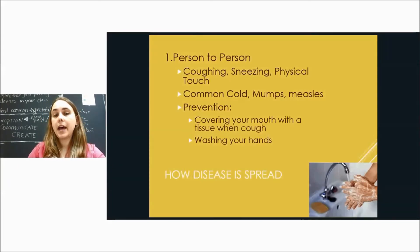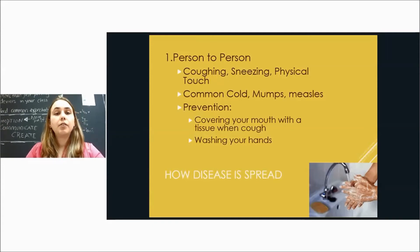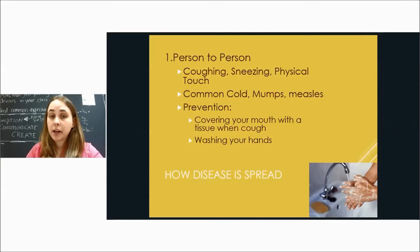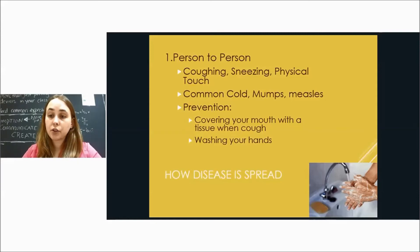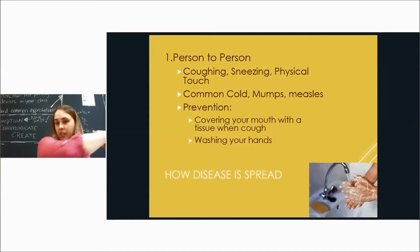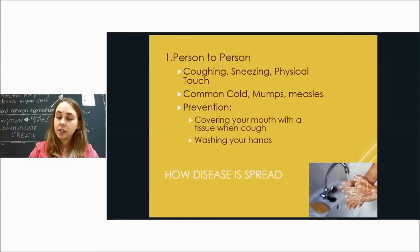Disease can be spread in several ways. The first is person to person: if you cough, sneeze on, or touch somebody while sick, you can give them the illness. Things like the common cold, mumps, and measles are spread through coughing, sneezing, and touch. To prevent this, cover your mouth with a tissue when you cough, wash your hands, and cough into your shoulder so you're not spreading it to the next person you touch.